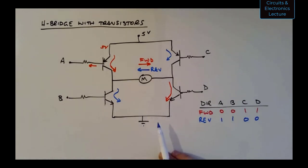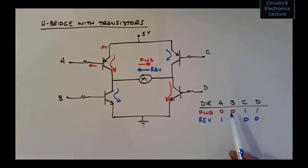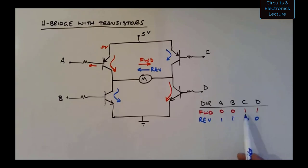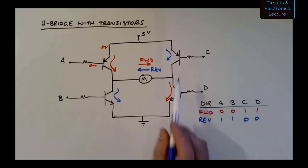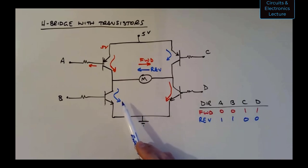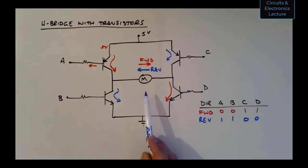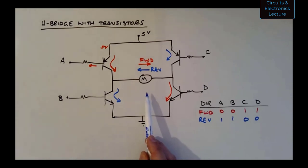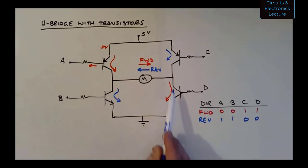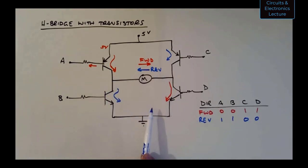If you want speed control, you can pulse-width modulate — turn on and off — these transistors so that you stop current from flowing for part of the cycle. That causes the motor to run at a slower speed if you modulate at a duty cycle less than 100%. So you could take a microcontroller and do both speed control and directional control with this H-bridge.